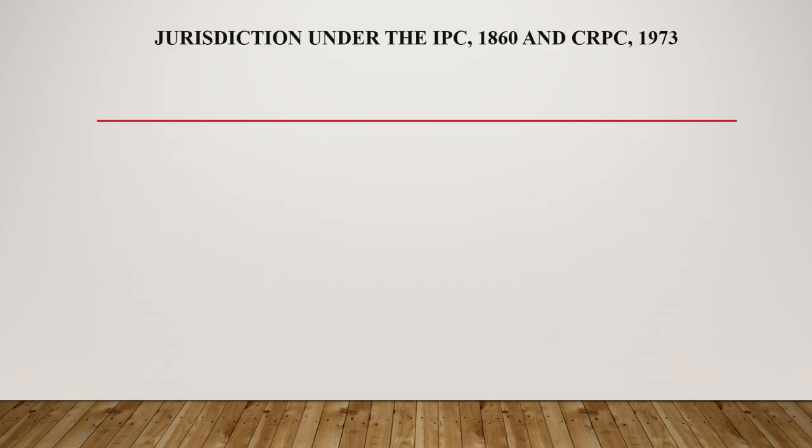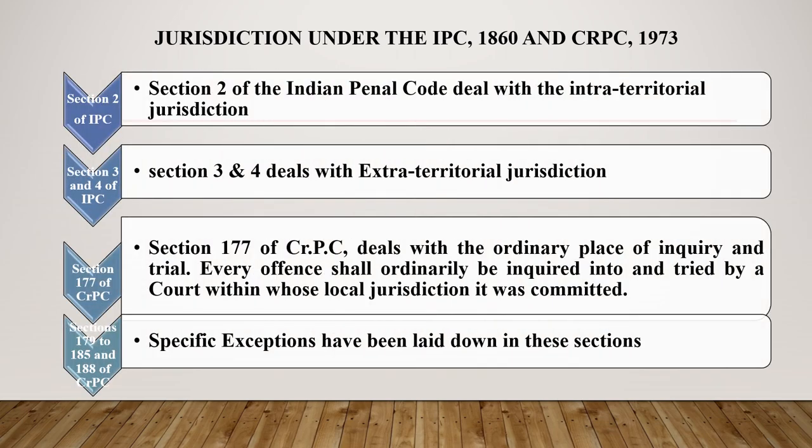Jurisdiction defined under IPC and CrPC: Under Section 2 of IPC, it deals with the intraterritorial jurisdiction. Sections 3 and 4 of IPC deal with extraterritorial jurisdiction. Sections 179 to 185 and 188 of CrPC deal with specific exceptions.